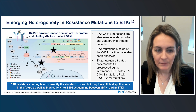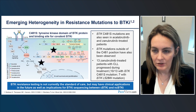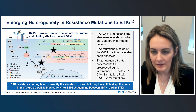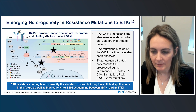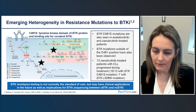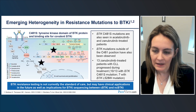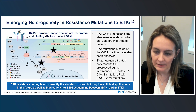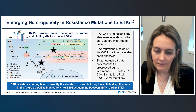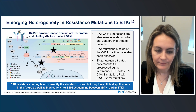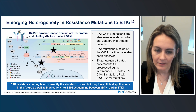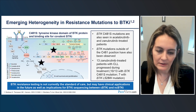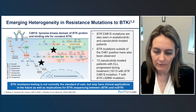The B-cell receptor signaling pathway shows cysteine-481 mutations occurring with acalabrutinib-treated patients. This has also been reported with zanabrutinib-treated patients. One report of 13 patients who progressed on zanabrutinib found that 10 of 13 had BTK cysteine-481 mutations, but 7 also had the BTK L528W mutation — a different mutation with different functional consequences. This emerging heterogeneity in resistance mutations currently doesn't impact sequencing or standard of care, but more research is needed.